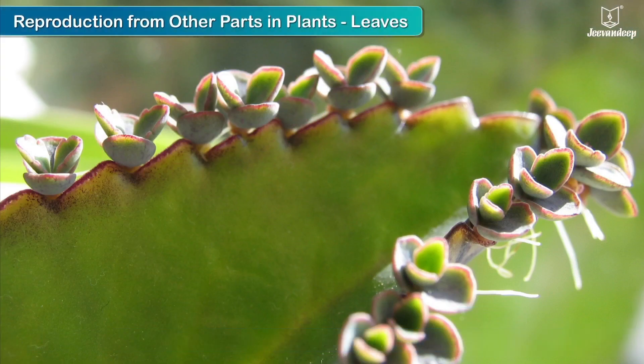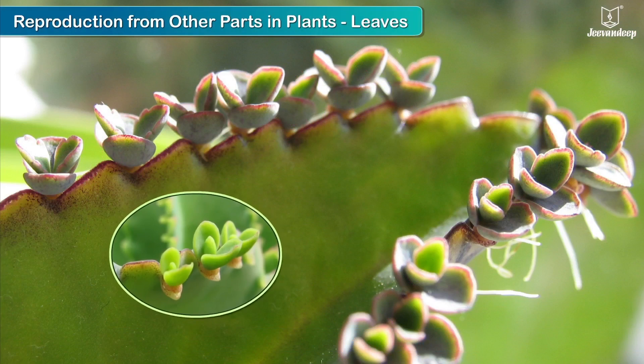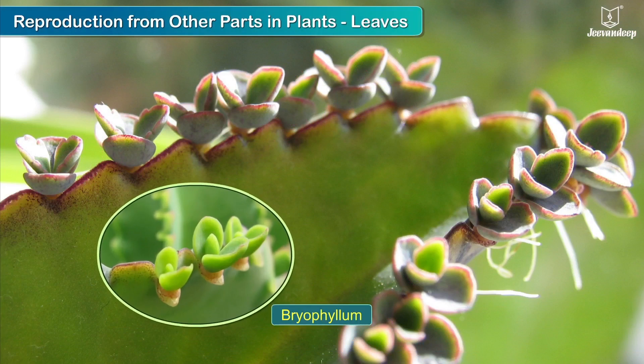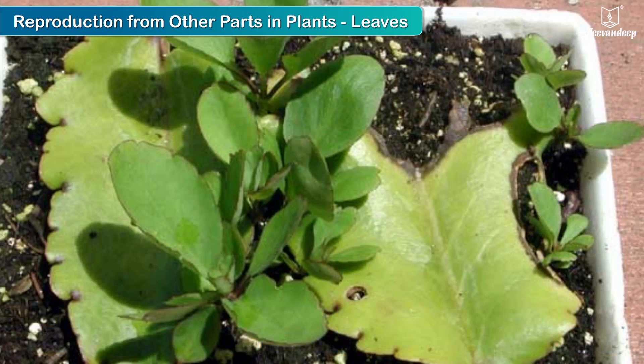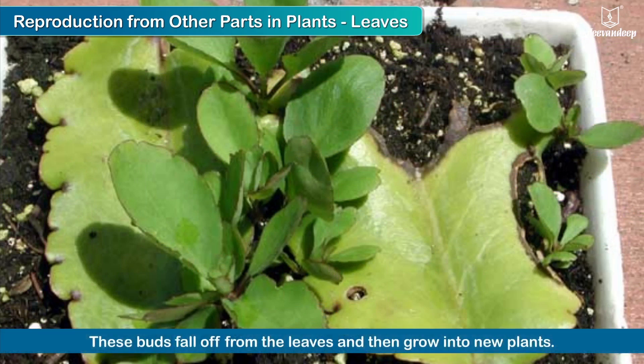Leaves: plants such as bryophyllum reproduce through small bud-like growths at the edge of their leaves. These buds fall off from the leaves and then grow into new plants.